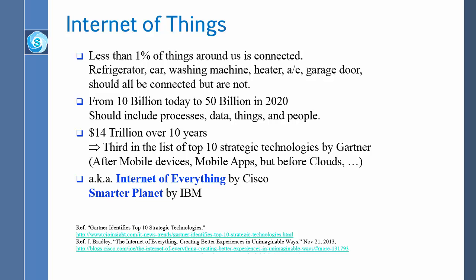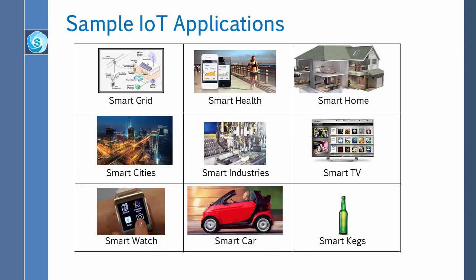That number is always an understatement because every year the projection goes up — it is always more than the previous one. IoT is ranked third in the list of top 10 strategic technologies by Gartner, after mobile devices and mobile apps but before the cloud. It is also known as Internet of Everything by Cisco, and IBM calls it a Smarter Planet. If you see those words, they are all IoT.